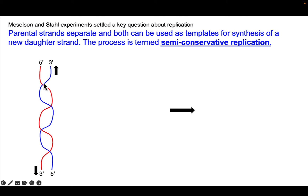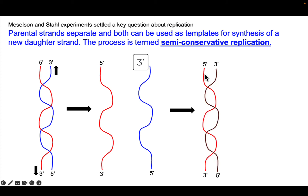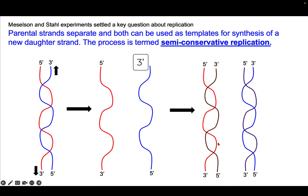Each parental strand here is labeled 5 prime to 3 prime, and the anti-parallel strand goes 5 prime to 3 prime in the opposite direction. What happens is that both strands separate. Then this red parental strand can be used as a template for a new daughter strand — shown in a darker red color — that is anti-parallel. The blue parental strand can also be used as a template for a new daughter strand. This is the semi-conservative model of DNA replication.